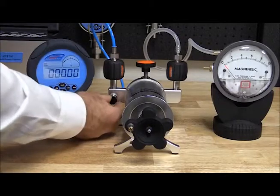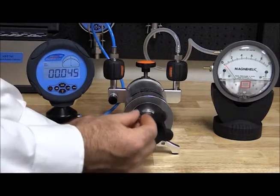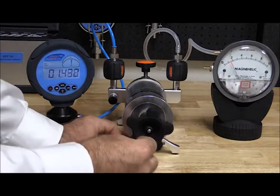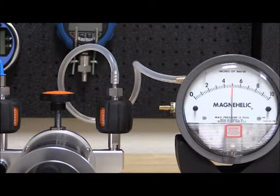Now we are ready to generate pressure and record our results. Typically three to five points are taken both ascending and descending. By taking more than two points, we are able to check the gauge's linearity and hysteresis.